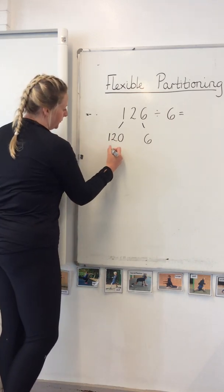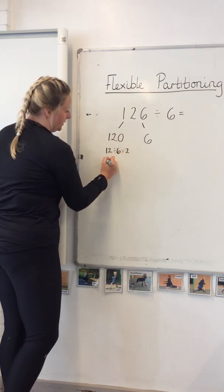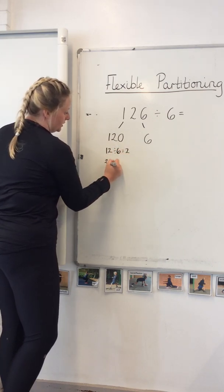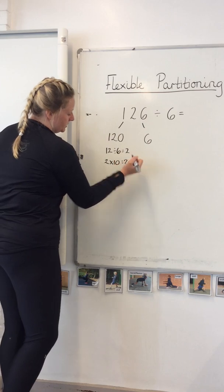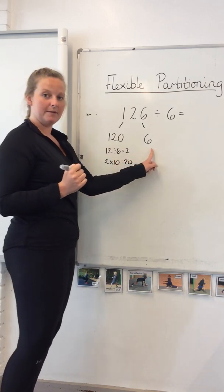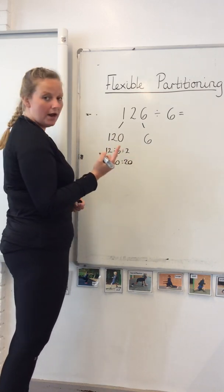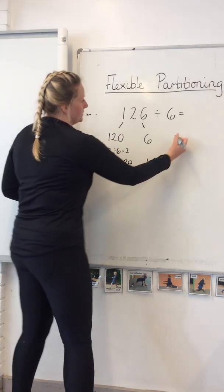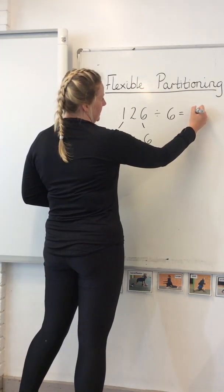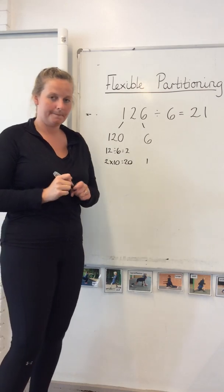For example, 12 divided by 6 is 2, and 2 times 10 is 20. Then 6 divided by 6 is 1. So bringing my answer together: 21.